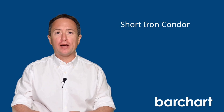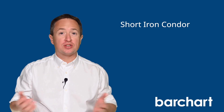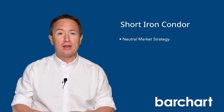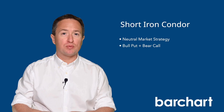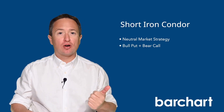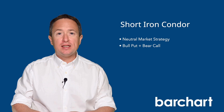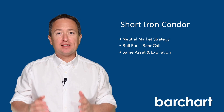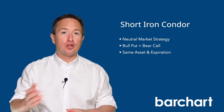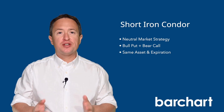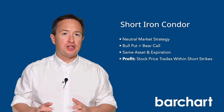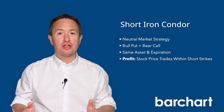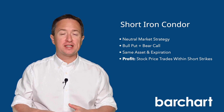A short iron condor, or most usually known as just an iron condor, is a directionally neutral option strategy that combines two credit spreads — the bull put spread and a bear call spread — all using the same underlying security and expiration date. The fact that this iron condor is short means that you'll collect a credit. With a short iron condor, the goal is for the underlying security's price to remain between the short strikes until expiration so that all four options expire worthless.